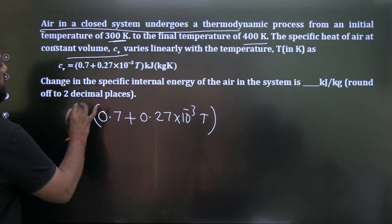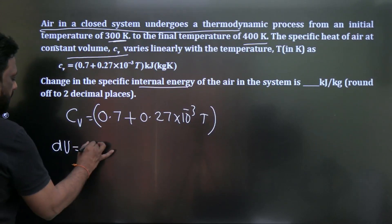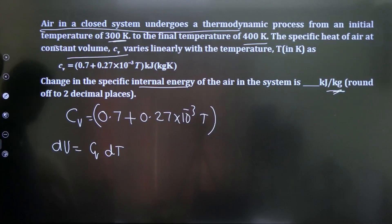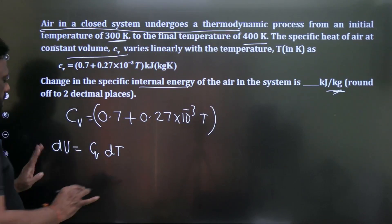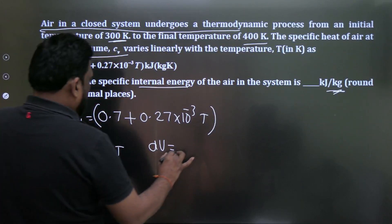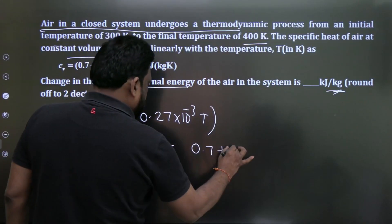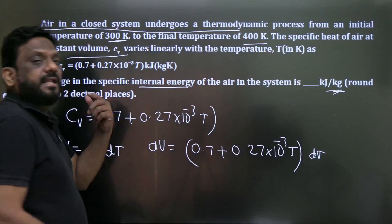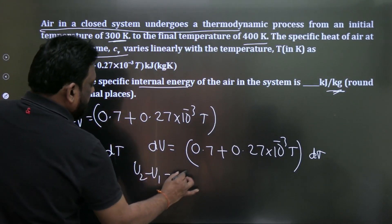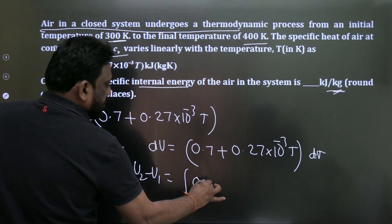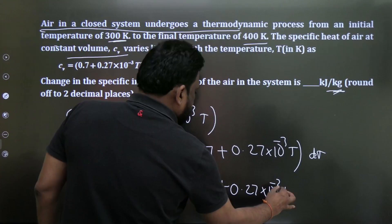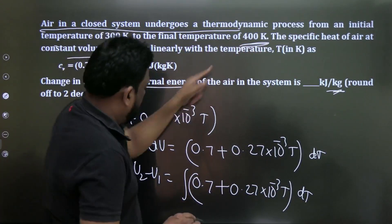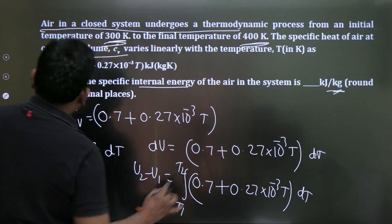To find the change in internal energy per kg: du = Cv·dT. Total change: Δu = ∫(300 to 400) (0.7 + 0.27 × 10⁻³·T) dT = [0.7T + 0.27 × 10⁻³ · T²/2] evaluated from 300 to 400.